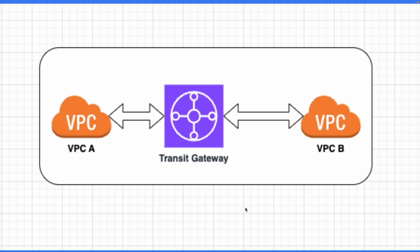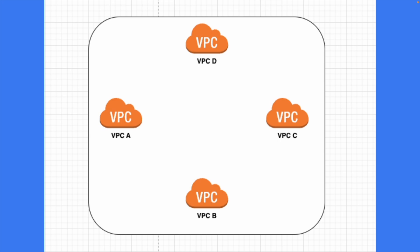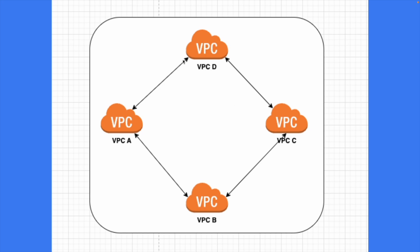With just two VPCs both options look similar, so let's increase the number of VPCs to better understand the situation. Let's take an example of four different VPCs: A, B, C, and D. To create a network connection between all of these using VPC peering, each arrow in the diagram represents a separate VPC peering connection — for example, VPC A communicating with VPC B.